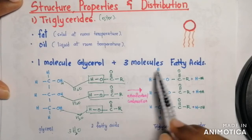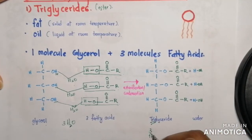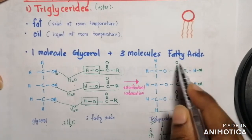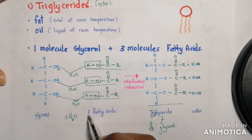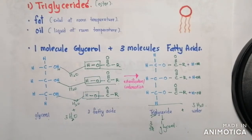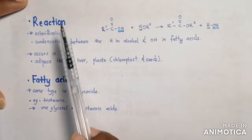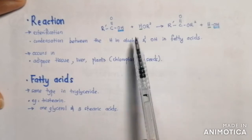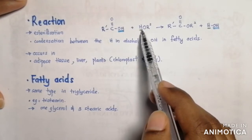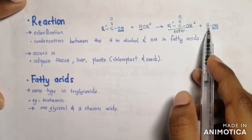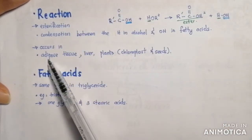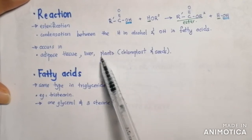Therefore it will form triglycerides, which have three fatty acids and one glycerol. All three linkages are called esters. So glycerol plus three fatty acids gives triglycerides and three molecules of water. This reaction is called esterification or condensation — the OH in the fatty acids and the H from the alcohol group are removed, forming ester bonds and water. This reaction occurs in the adipose tissue and liver in animals, and in chloroplasts and seeds in plants.